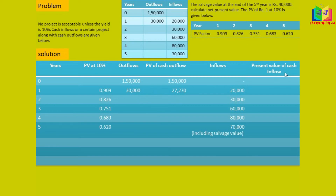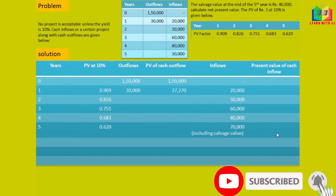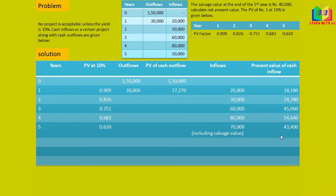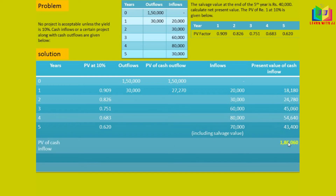Similarly, we have to find the present value of cash inflows: 0.909 × 20,000; 0.826 × 30,000; 0.751 × 60,000; 0.683 × 80,000; and 0.620 × 70,000. I have written these out and now I have to calculate the total present value of cash inflows by adding all of these together.